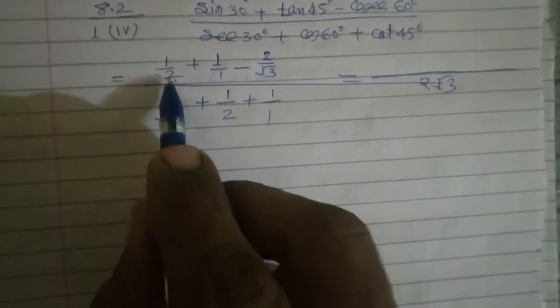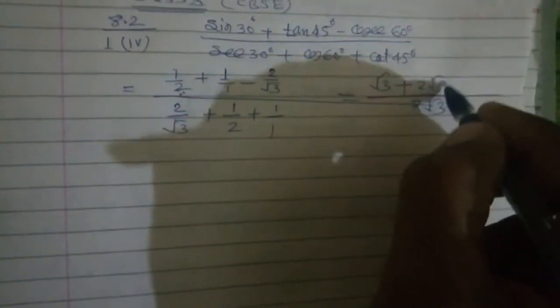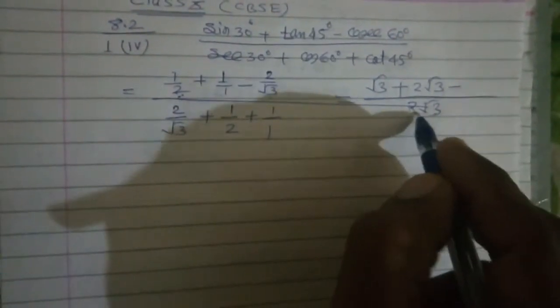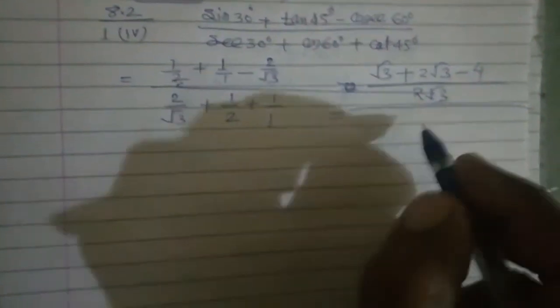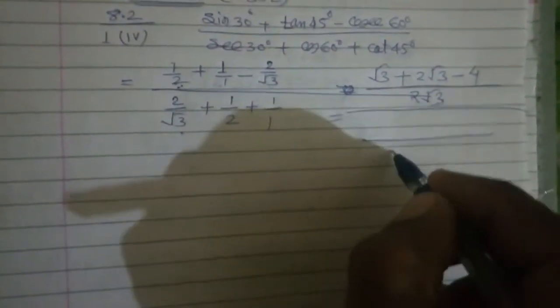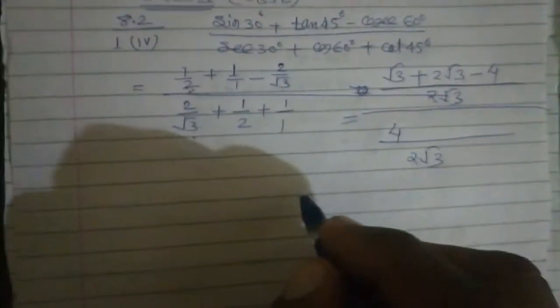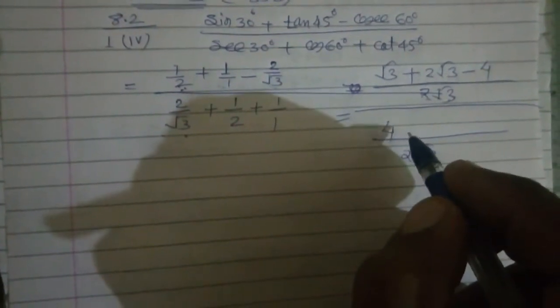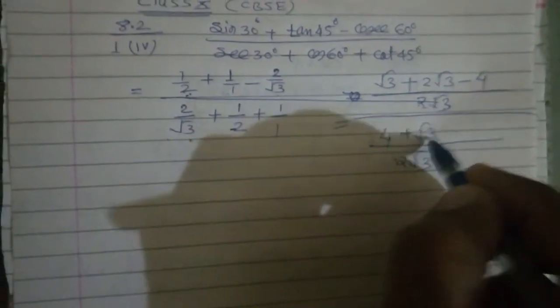2 root 3 को अगर हम इस 2 से divide करेंगे — 2 से 2 कट गया, root 3 बचा — root 3 into 1. Root 3 plus, 1 से divide करो — 2 root 3 आएगा — 2 root 3 into 1 में 2 root 3 आएगा। Minus — root 3 से root 3 कट हो गया — 2, और 2 into 2 में 4 आएगा। So 2 root 3.